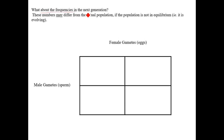Just like Punnett squares in Mendelian genetics were used to make predictions, we'll do the same with population genetics. The Punnett square I'm drawing here is not just for one male and one female — it represents the entire population. The female gametes at the top represent collectively all eggs from the entire female portion of the population. The numbers may differ from the actual population, meaning the population may be evolving.